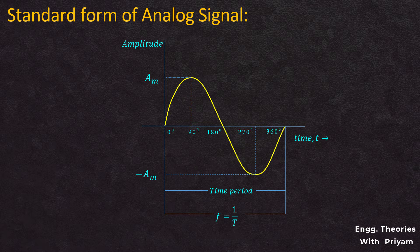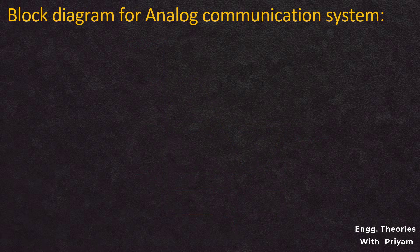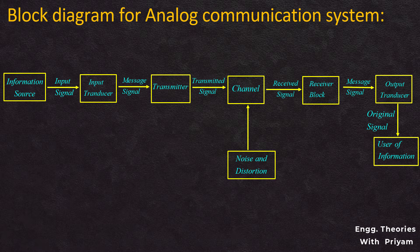Analog communication system is the method of conveying voice, image, signal, or video information using a continuous signal which varies in amplitude, phase, and other properties in proportion to the information bearing signal. The block diagram for this type of communication is the same as discussed in the previous lecture. If you haven't watched it, go to the analog communication playlist and watch the lecture on the basic block diagram of the communication system.